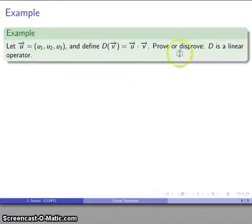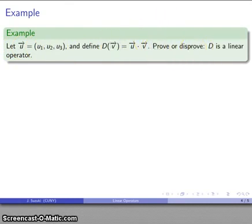Let's take an example. Let u⃗ = (u₁, u₂, u₃) and I'll define a particular operator D. If I apply that to the vector v⃗, it's going to be u⃗ · v⃗, this given vector dotted with whatever vector I have. We want to prove or disprove that D is a linear operator. We'll check those requirements.